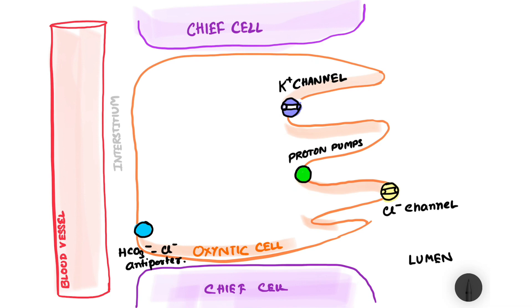These are the transport proteins in action. Now we have to see what happens. So first what happens is that CO2 present in the blood diffuses out into the interstitium and enters the oxentic cell.